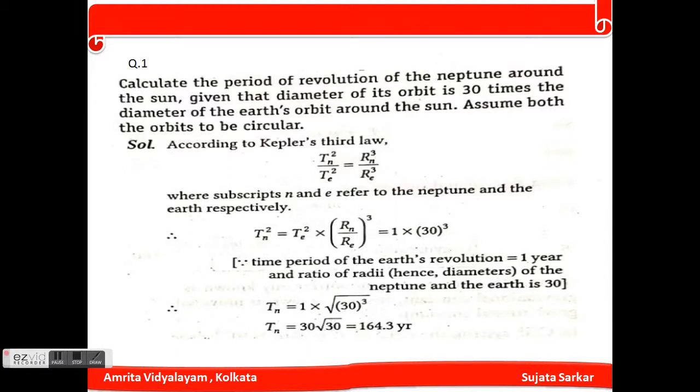This is my first numerical. Calculate the period of revolution of Neptune around the sun given that the diameter of its orbit is 30 times the diameter of the earth's orbit around the sun. Assume both the orbits are circular.